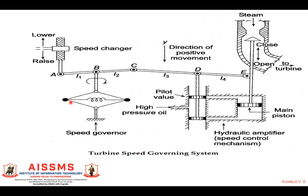In the opposite case, suppose the speed of the generator decreases — the flyball will move in the inward direction. When it moves inward, B moves upward, C downward, D upward, and E downward. When D moves upward, high-pressure oil flows in that direction, moving the main piston downward. When the main piston moves downward, the steam valve opening is increased, so the rate of flow of steam to the turbine is increased. The turbine rotates at a higher speed, the generator rotates at a higher speed, and it increases the active power — that is, it controls active power as well as frequency.